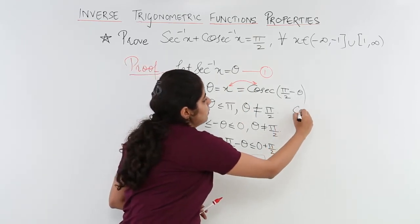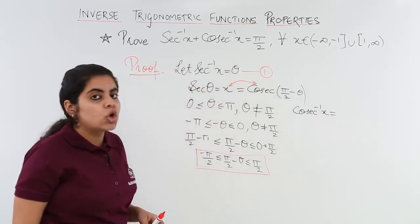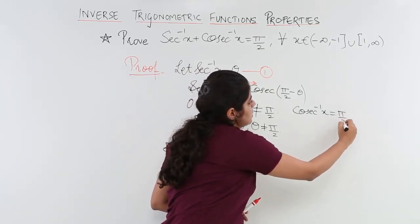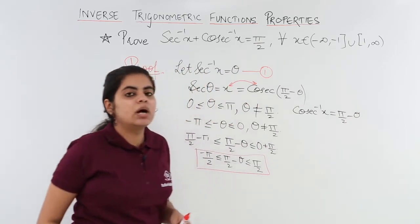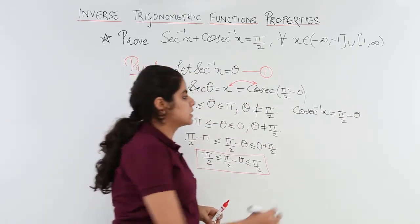That means what? That means csc⁻¹x = 90° - θ. Now what about θ from equation 1? I have sec⁻¹x = θ.